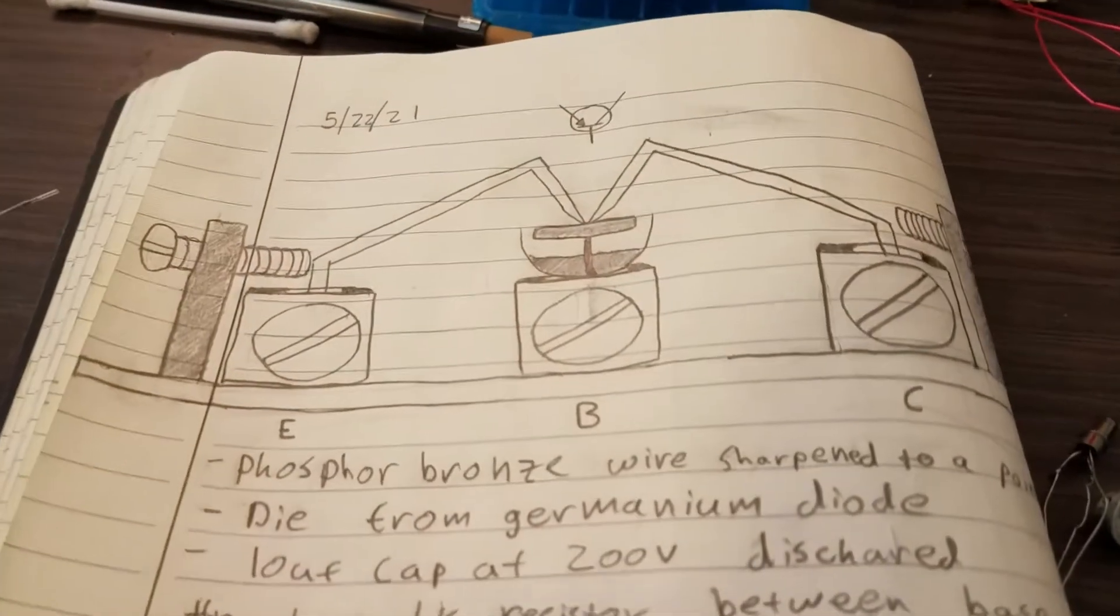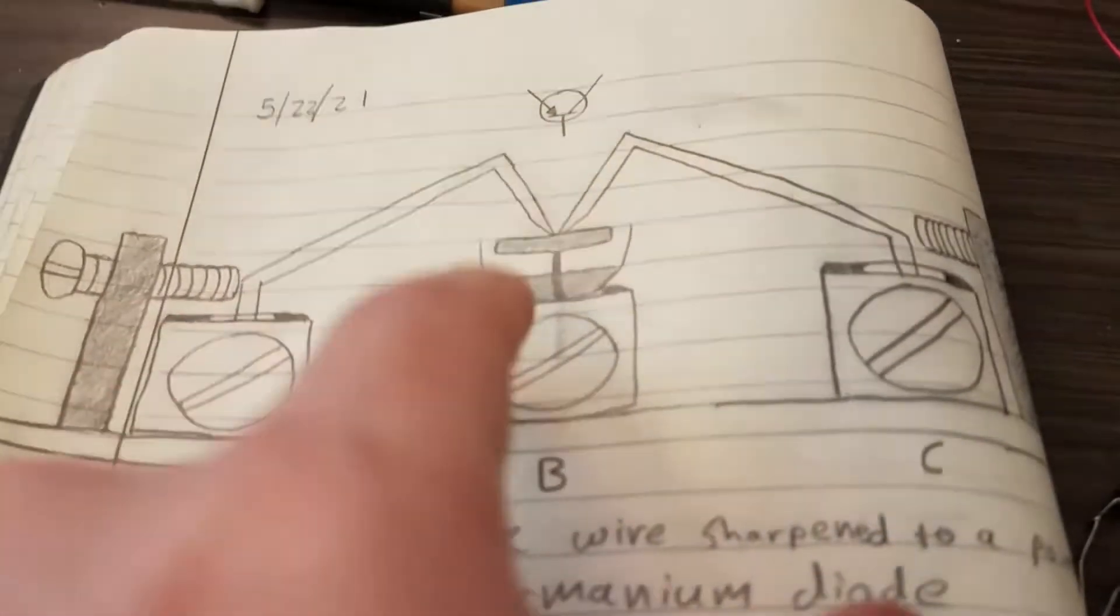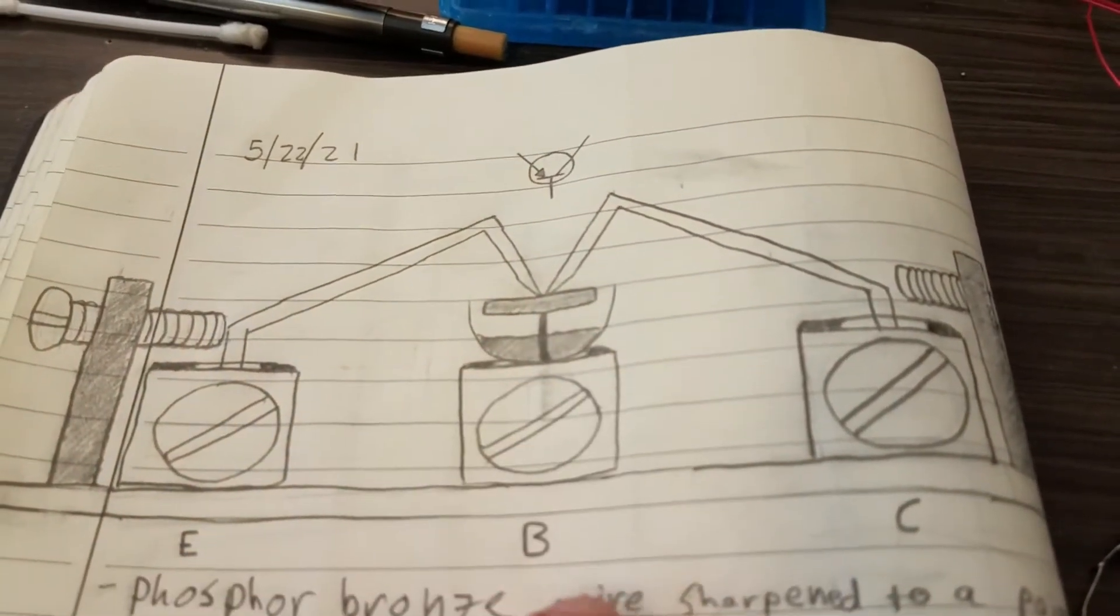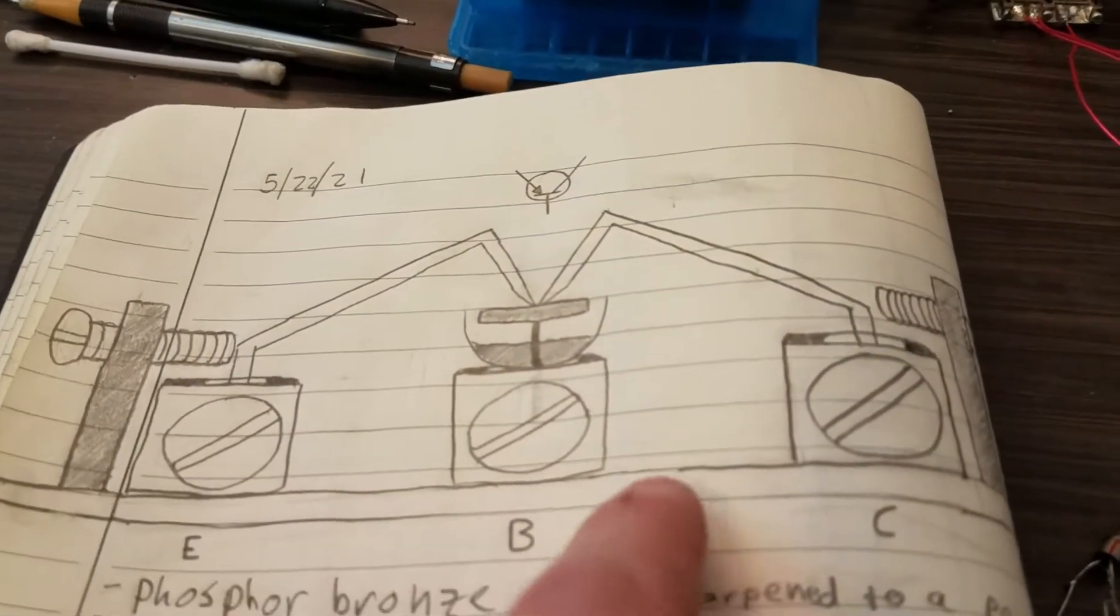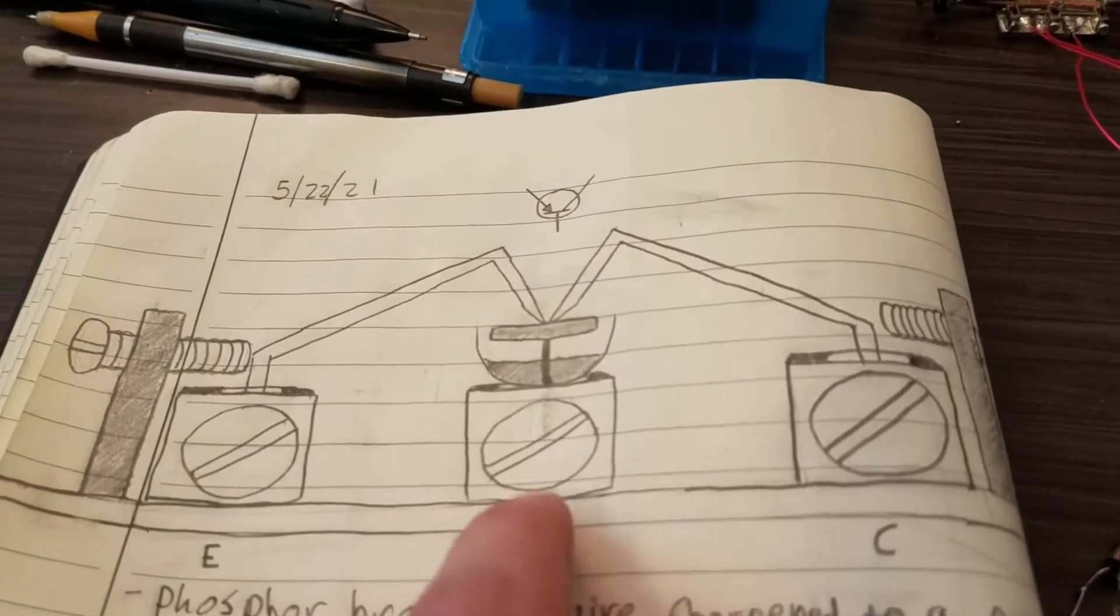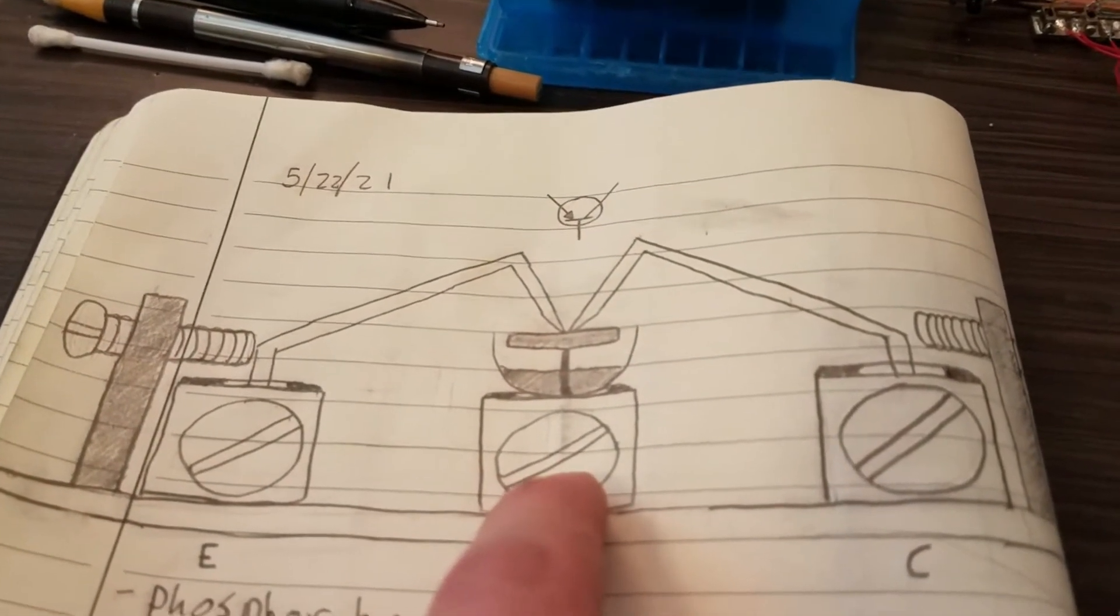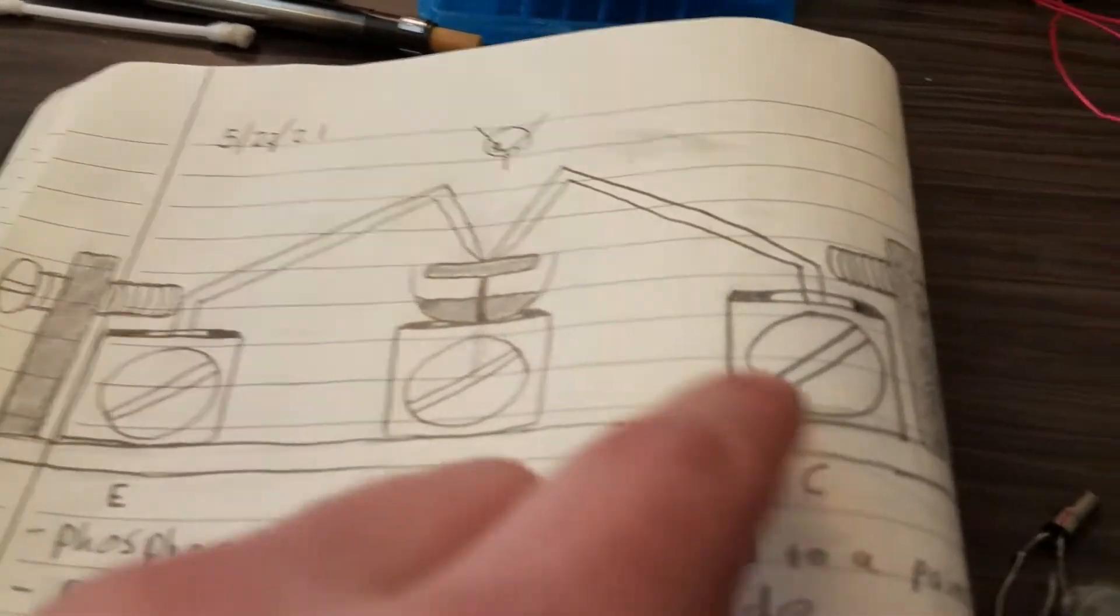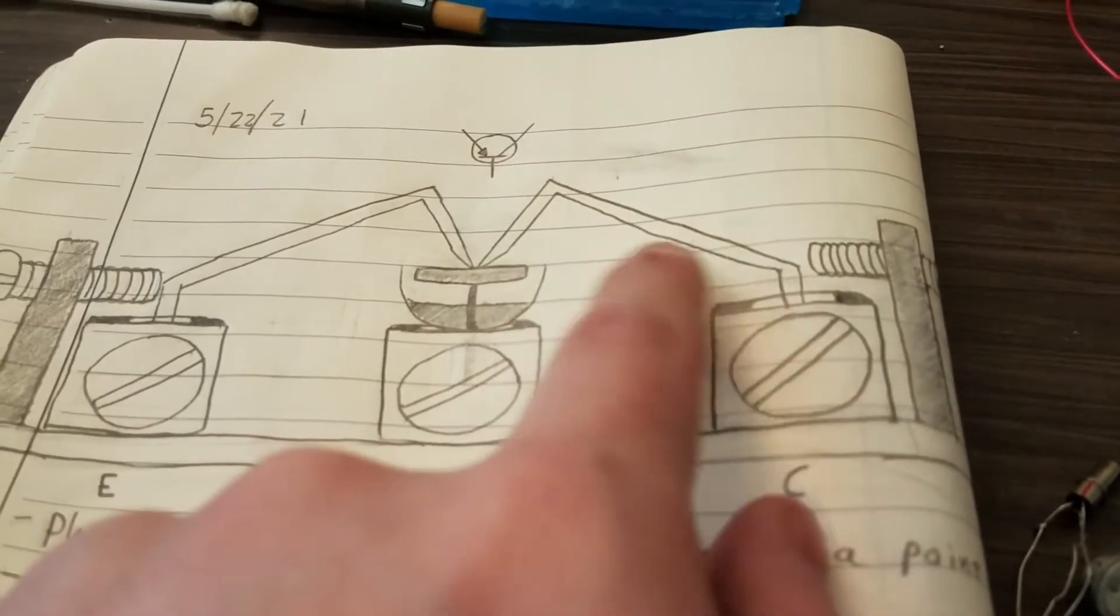And how I built it was as I said I cracked open a germanium diode and there's a piece of n-type germanium in there. And I soldered these little terminal blocks onto a piece of copper clad board just to get a platform. And these have screw terminals so you can easily replace stuff. And there's two screws on either side that you can use to gently move the needles back and forth.